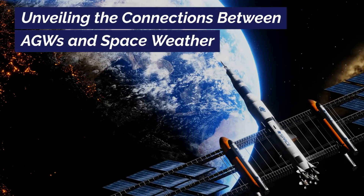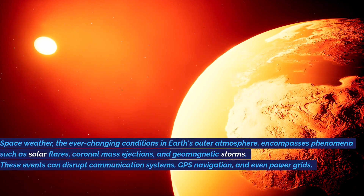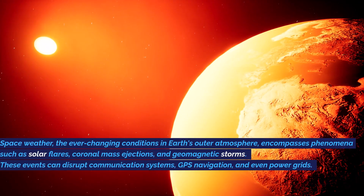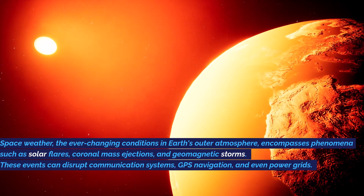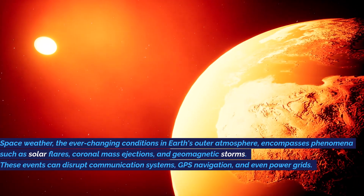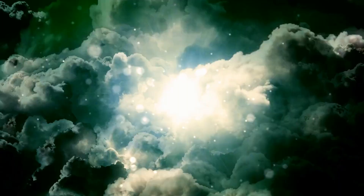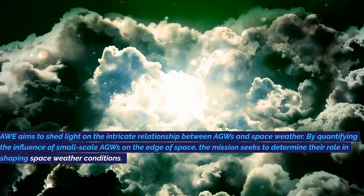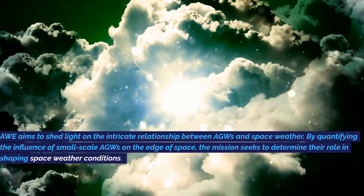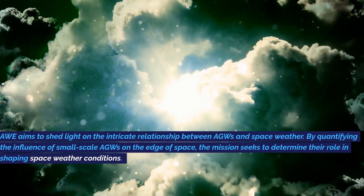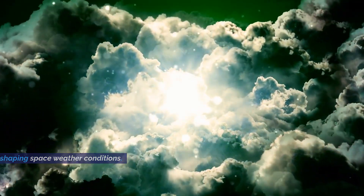Unveiling the connections between AGWs and space weather: space weather, the ever-changing conditions in Earth's outer atmosphere, encompasses phenomena such as solar flares, coronal mass ejections, and geomagnetic storms. These events can disrupt communication systems, GPS navigation, and even power grids. The BAW mission aims to shed light on the intricate relationship between AGWs and space weather by quantifying the influence of small-scale AGWs on the edge of space, seeking to determine their role in shaping space weather conditions.